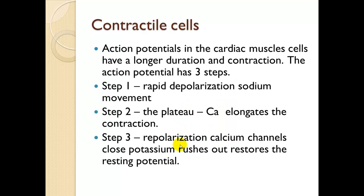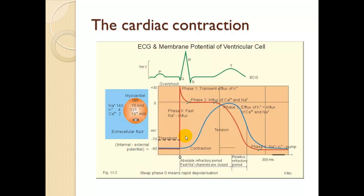Action potentials in cardiac muscle cells have a longer duration and contraction. The action potential has three steps. In step one, rapid depolarization occurs with sodium movement. In step two, the plateau phase, calcium elongates the contraction. Calcium is essential — it initiates the sodium-potassium pump movement of electrolytes in and outside the cell. In step three, repolarization occurs: calcium channels close, potassium rushes out, and resting potential is restored. We essentially get an influx and outflux of potassium, sodium, and calcium.